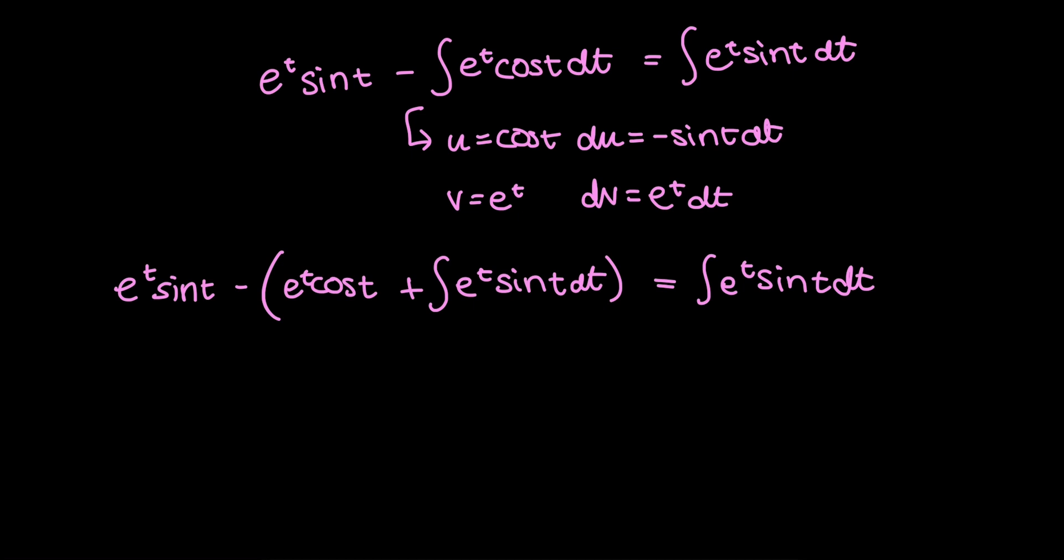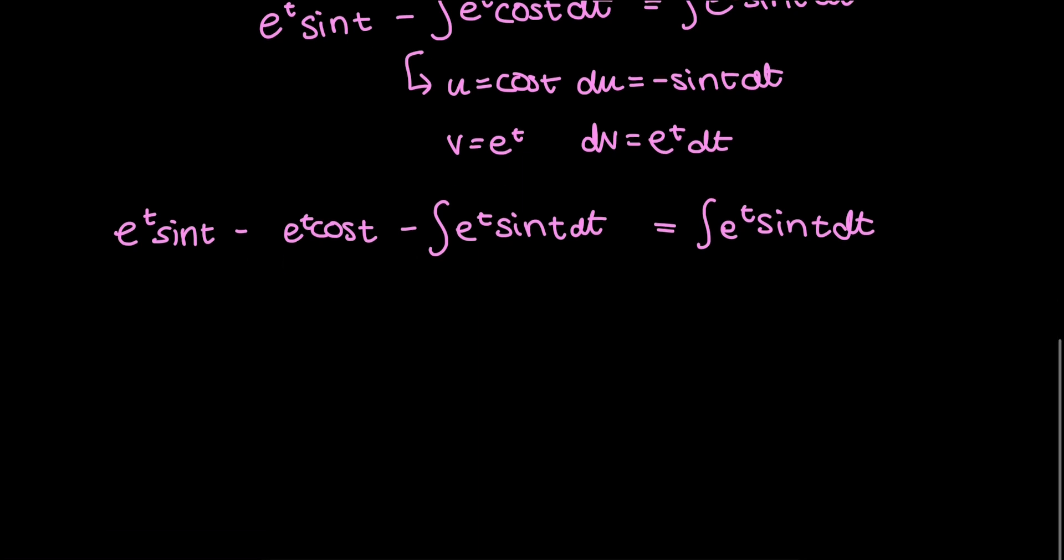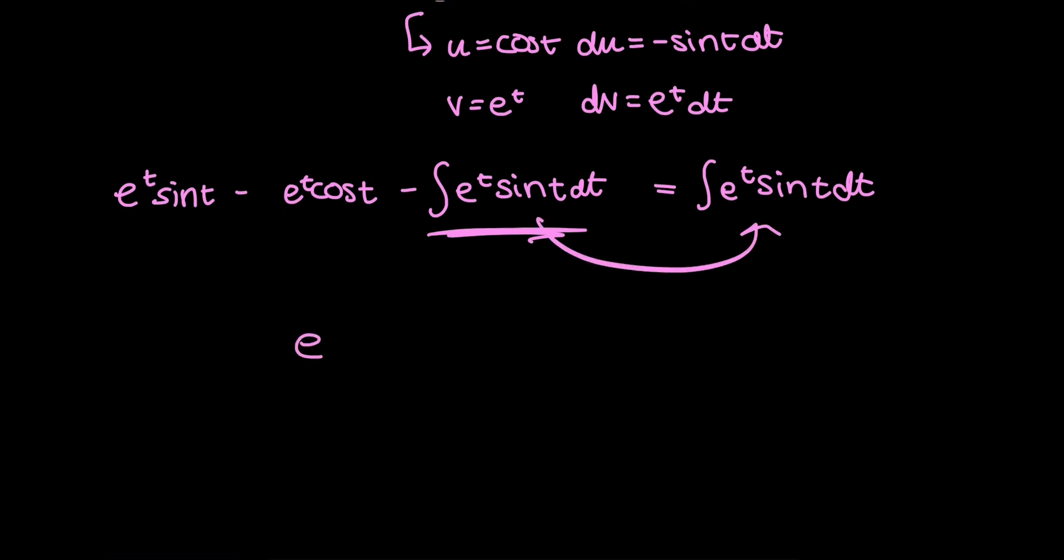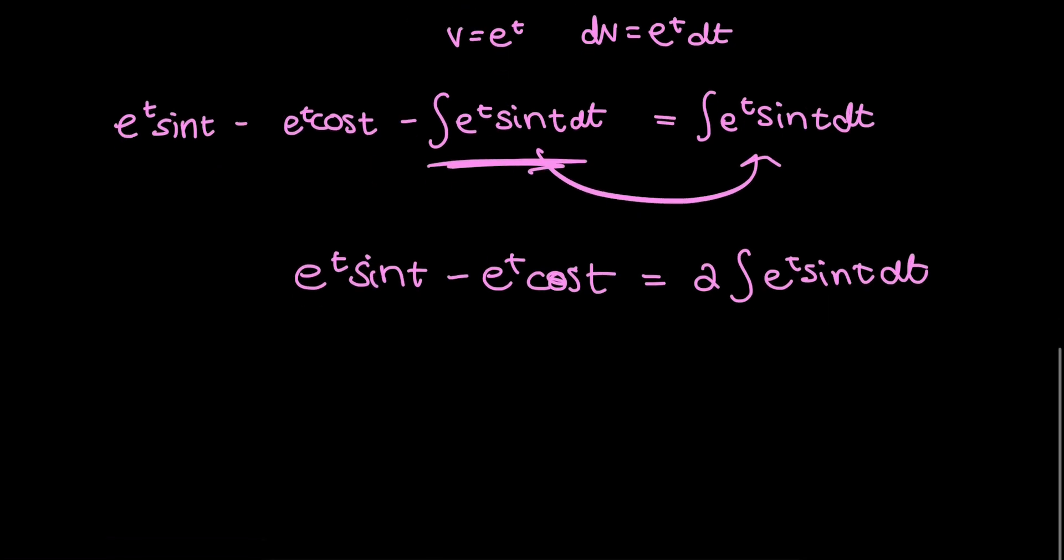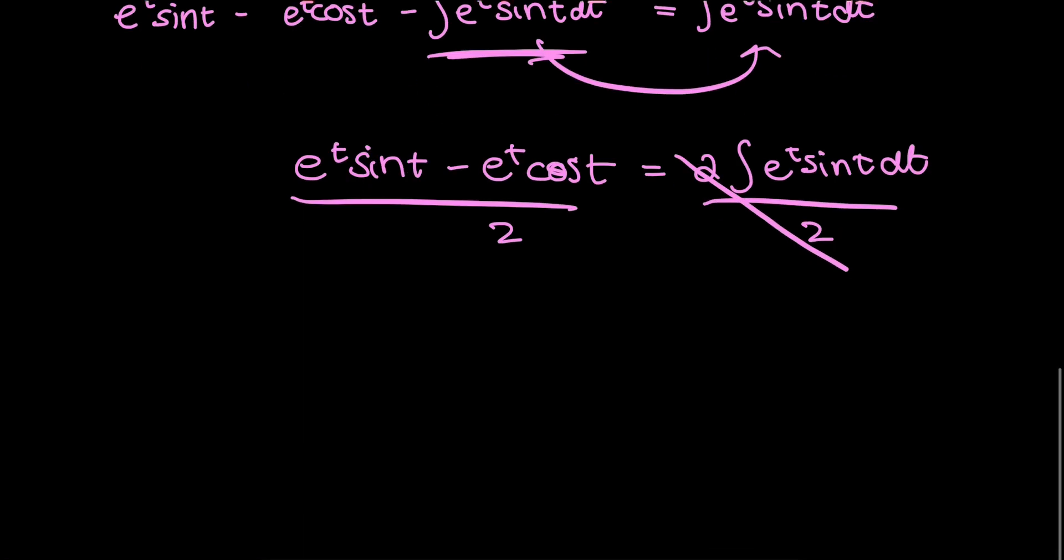So what I mean by this is I will be isolating this integral term. So distributing that negative, I just get that. So now I can move this integral term to the other side, and I get e to the t sine t minus e to the t cosine t is equal to two copies of the integral e to the t sine t dt. And now to fully isolate the integral term, I divide by two on both sides. And so my integral e to the t sine t dt is equal to e to the t sine t minus e to the t cosine t divided by two.